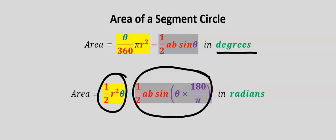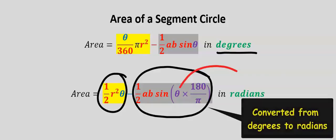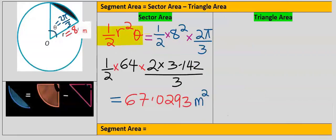Note that the angle in the triangle formula is usually in degrees, so we need to multiply the radian angle by 180 divided by π to convert it. From the area-of-a-sector formula with radians, when you substitute and solve carefully, you get 67.0293 square meters.